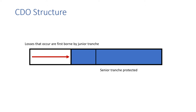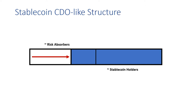If there's a loss that's incurred, this is first borne by the junior tranche, and the senior tranche is protected. Relating back to stablecoins, the junior tranche is really the risk absorbers in the system, and the stablecoin holders are meant to be the senior tranche.